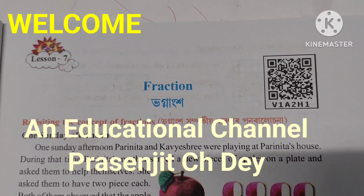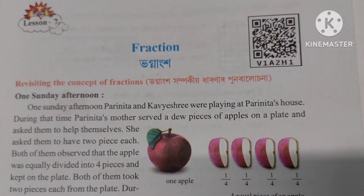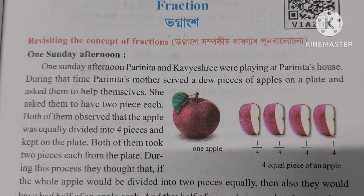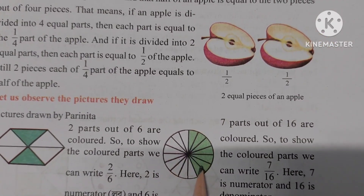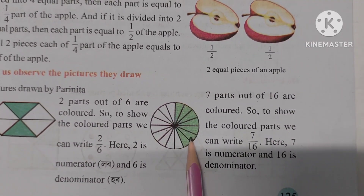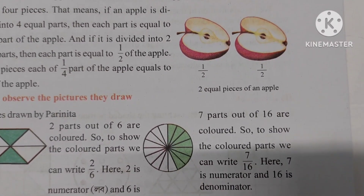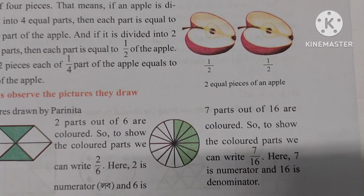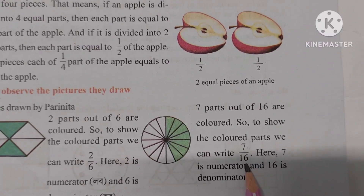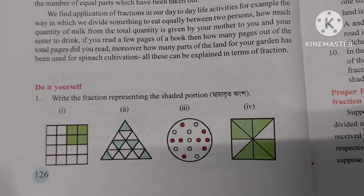Welcome, namaskar dear viewers and learners. Class 6 Mathematics, Lesson 7: Fractions. We have 7 by 16 — we can write 7 by 16. That means 7 is called the numerator and 16 is the denominator. Page 126, Class 6 new book mathematics.